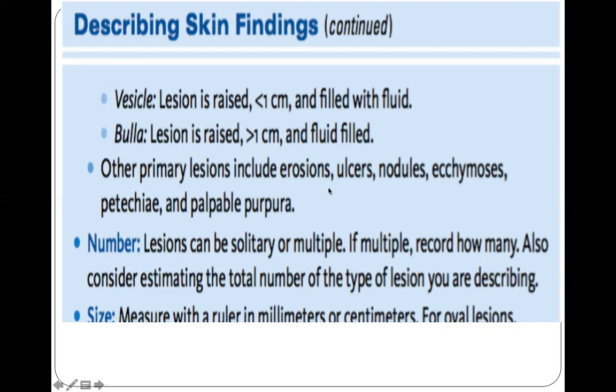Other primary skin lesions include erosion, ulcer, nodules, ecchymosis, petechia, and palpable purpura. You also have secondary skin lesions, which we will discuss shortly. Lesions can also be described according to number — solitary or multiple.